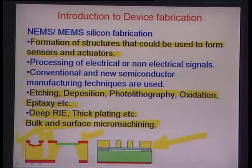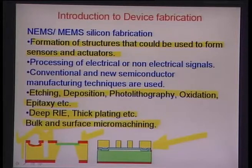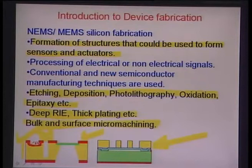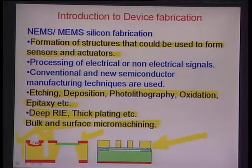In wet etching, there is always an undercut irrespective of how thick the masking material is. Therefore, the mask has to be designed with this in mind — the mask size has to typically be a little less than the size you would like to etch away in the silicon.